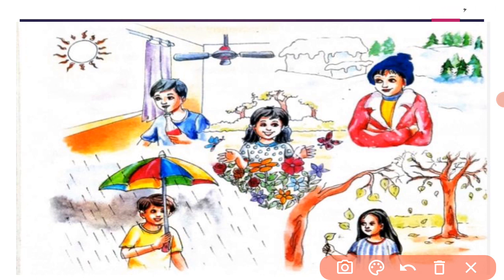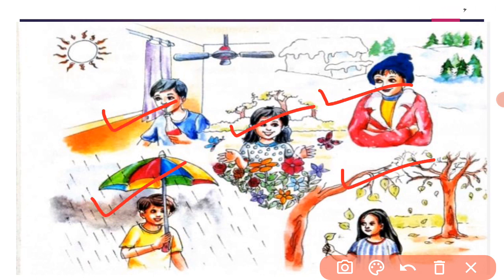Children, see in this picture — changes in weather at different seasons in a year. Ek saal mein different seasons hote hain: summer season, winter season, spring season, rainy season, and autumn season. In these seasons weather changes, and this change in weather has an effect on our daily activities.